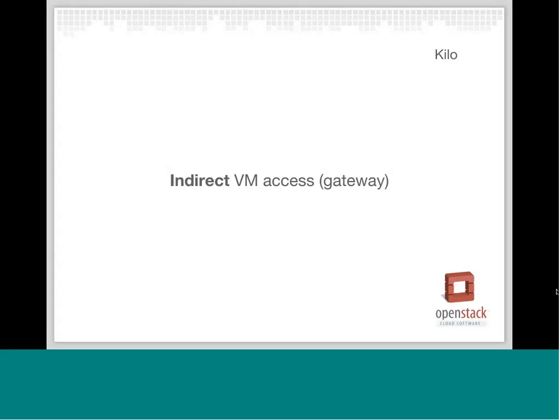In Kilo, indirect virtual machine access was implemented. There is now a way to set some node groups to be gateways to access other nodes, and the Sahara controller will use gateway nodes as proxies to access other nodes. This is needed to better conserve virtual IP addresses, so you don't need public IP addresses assigned to all nodes, and Sahara will still be able to access them.